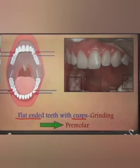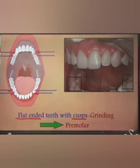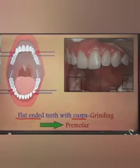Next, we have another kind of teeth used for mashing and grinding food, known as premolars, or cracking teeth. The broad teeth just next to the canines, used for cracking hard foods, are called premolars. In the picture you can see they have flat ends which are used as grinders.